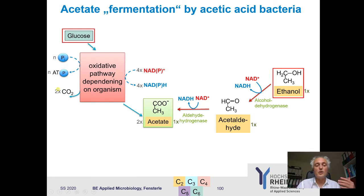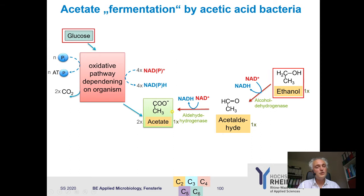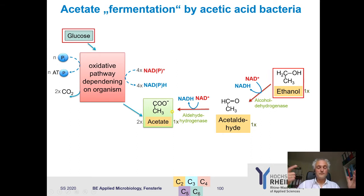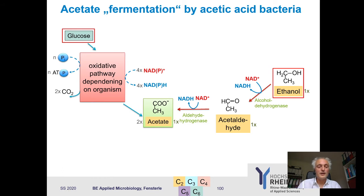You always produce two CO₂ molecules because glucose is C6 and acetate is two times C2, which equals C4. The two missing carbons leave as carbon dioxide.